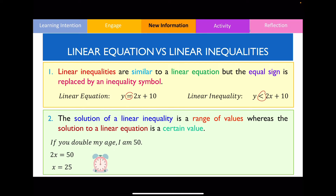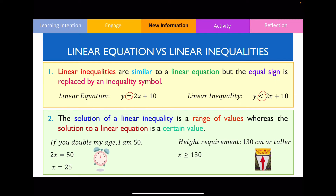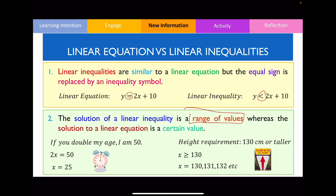A real life example of a linear inequality is where you need to be of a certain height to go on certain rides. The height requirement is 130 centimeters or taller, so I could write that as x ≥ 130. The possible values that make sense could be 130, 131, 132, and the list just keeps going. That's what I mean by the solution of a linear inequality taking on a range of values, or multiple values.